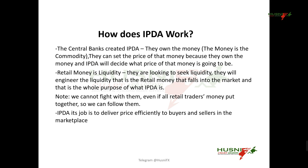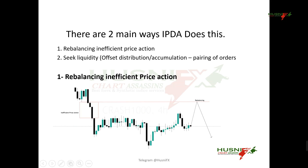Now we know what the IBDA is and how the IBDA works. We have to understand that there are two main ways the algorithm does this. Number one is price rebalancing in an inefficient price action — this is what the IBDA is doing. Number two is the algorithm seeking liquidity.